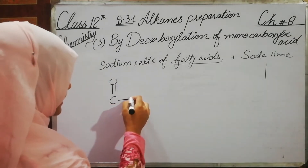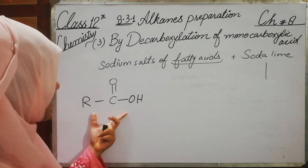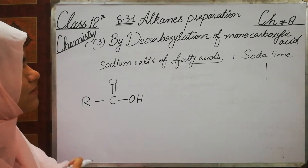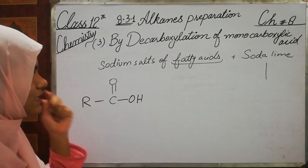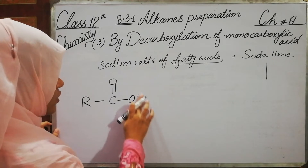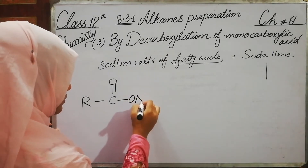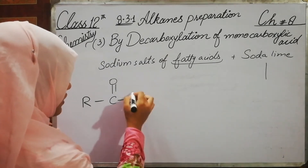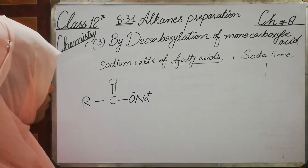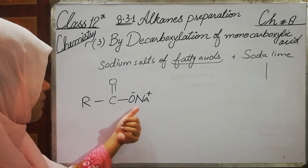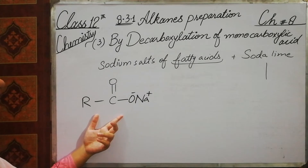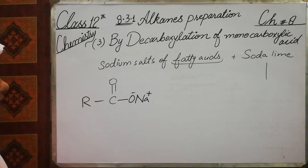Now, what is the carboxylic acid here? We need the sodium salt of the fatty acid. We add sodium to the carboxylic acid — the bond breaks into negative and positive — and we get the sodium salt of the fatty acid.